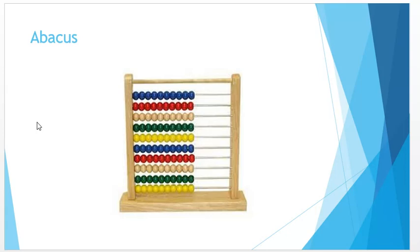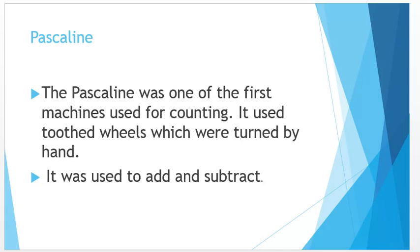After abacus, another device was invented, another machine was invented, and that machine is called Pascaline. The Pascaline was one of the machines used for counting. Before Pascaline we have a few devices like abacus, but that was not a mechanical machine. The Pascaline was the first mechanical machine that is able to count. How does the Pascaline work? It used toothed wheels which were turned by the hand. By moving the toothed wheels with the help of hand, we were able to do the counting.